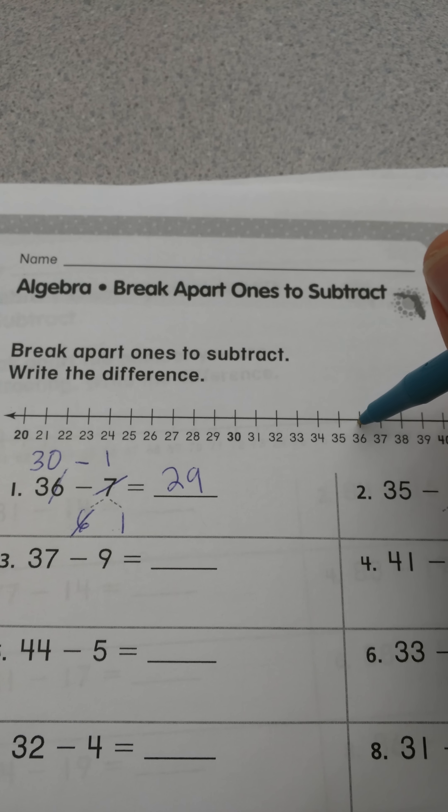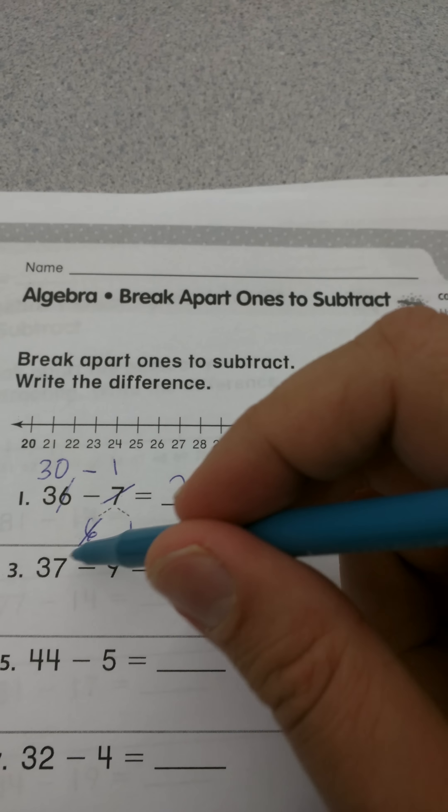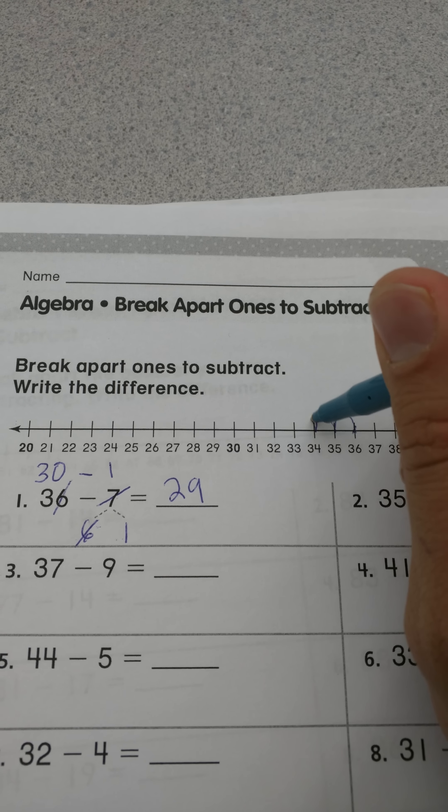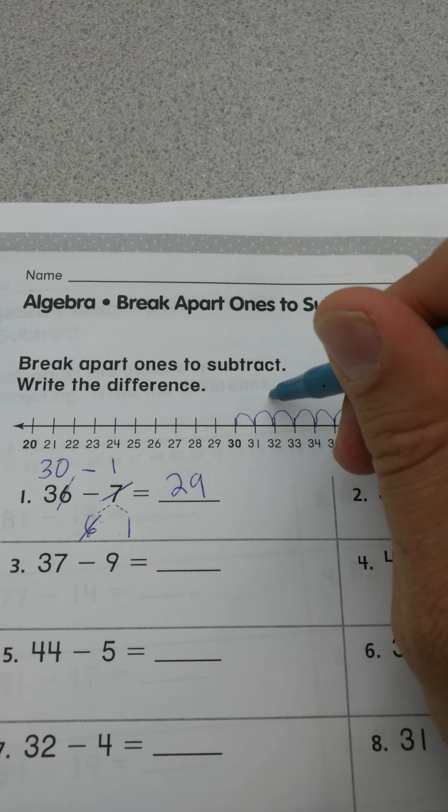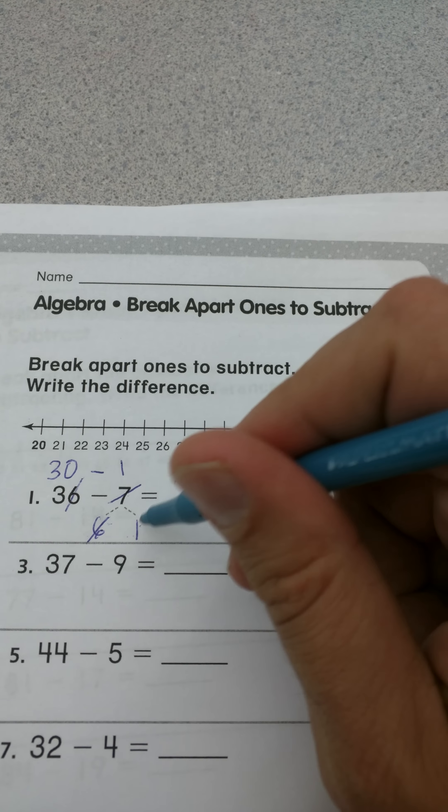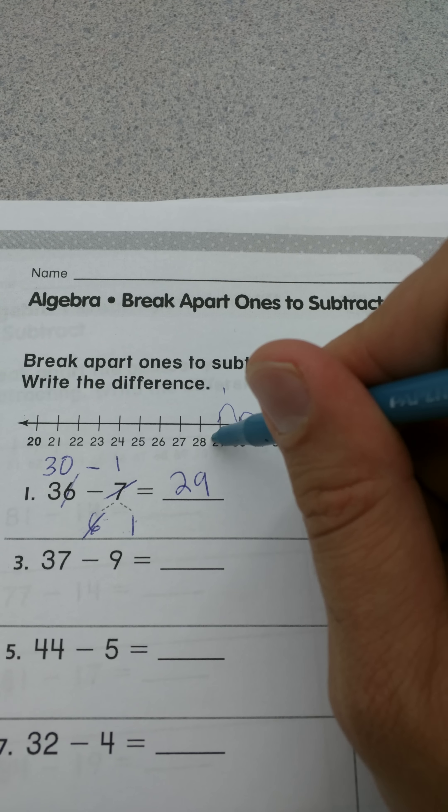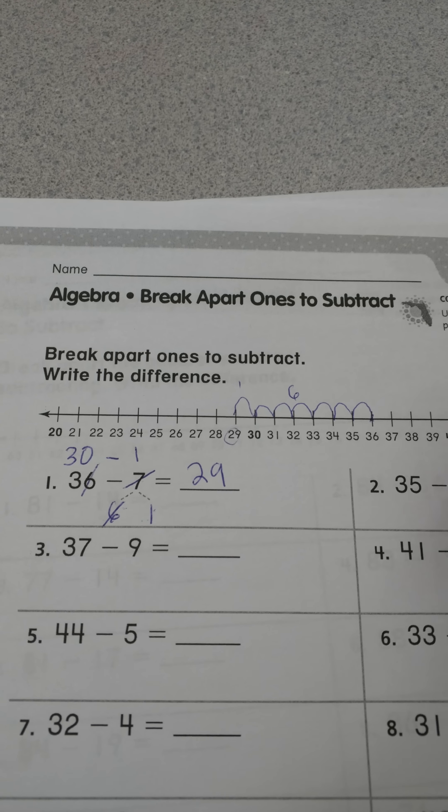And so if we start at 36 on the number line and let's say I move six. One, two, three, four, five, six. And then I know I need to move one more one. So that answer is 29 right there. See that? Okay.